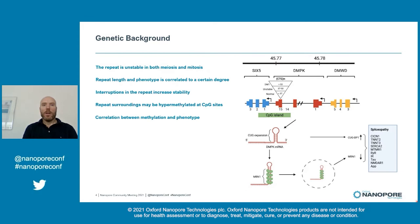Below 37 CTG is considered normal, but if it expands beyond that, it becomes unstable and results in a DM1 phenotype if it expands beyond 50 repeats. The repeat is unstable in both meiosis and mitosis, so it can expand over generations and during the lifespan of an individual. Repeat interruptions are generally found to stabilize the repeat, but this effect may be underexplored.